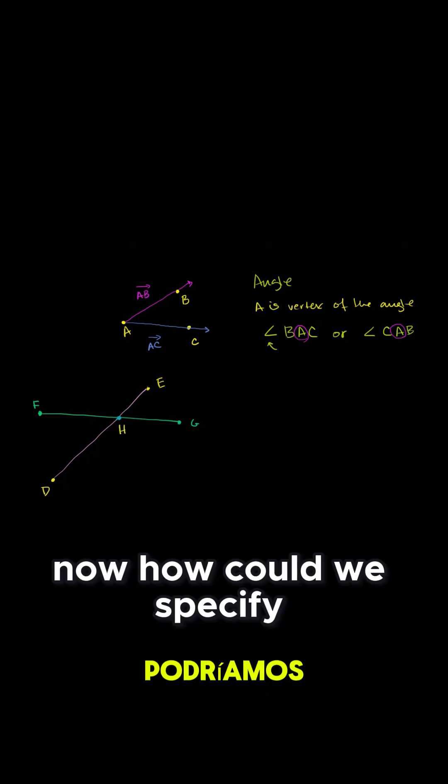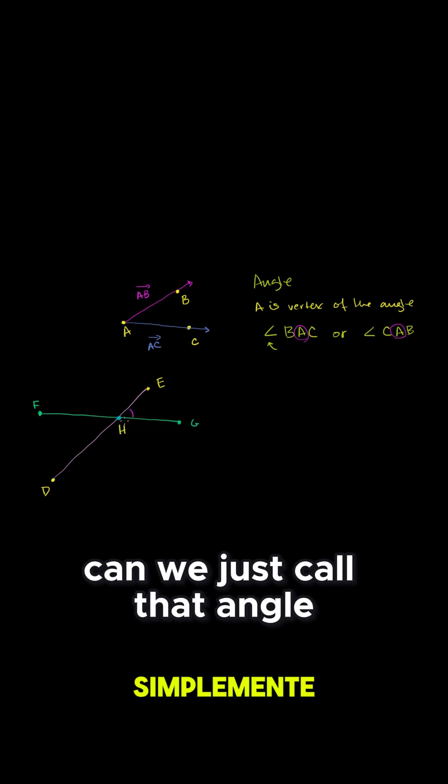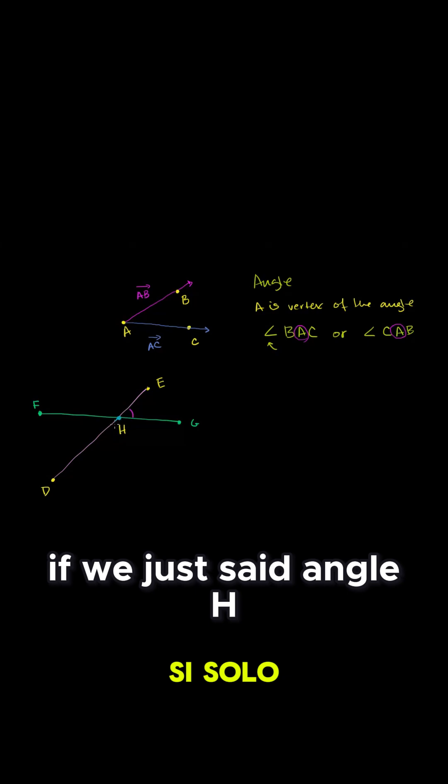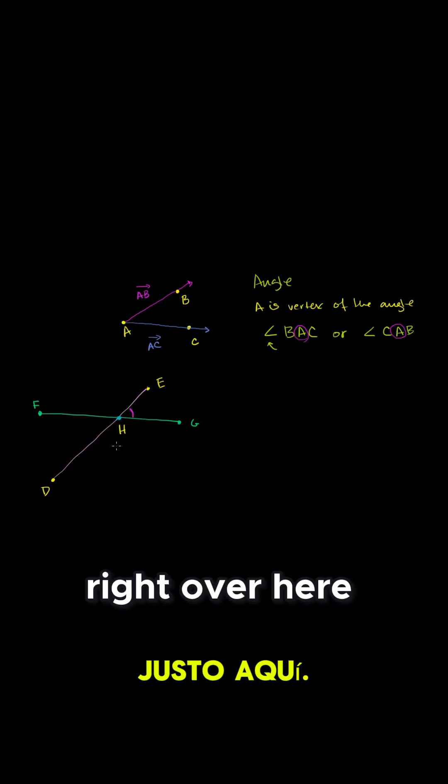Now, how could we specify this angle right over here? Can we just call that angle H? Well, no, because if we just said angle H, the angle that has a vertex H, it could be this angle right over here, or it could be this angle right over here.